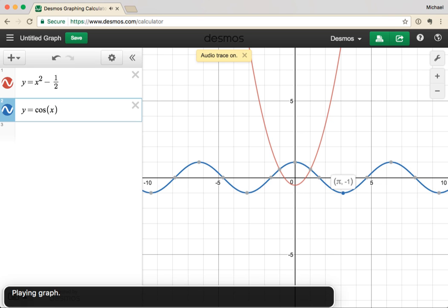When the graph is below the x-axis, we introduce some static into the audio, further helping students establish a sense of the graph's position in the plane. Finally, points of intersection are called out with a delightful little pop. Let's play it again. See if you can hear those four audio features.